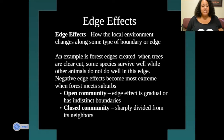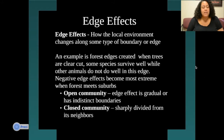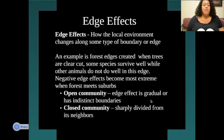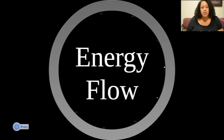The edge effect is how the local environment changes along some type of boundary or edge. A great example is when a clear-cut of trees occurs — like in suburbs where all of a sudden it's forest, then it's houses — and it can have a negative effect on animals like deer. Open communities have a gradual or indistinct edge effect, slowly changing from forest to grassland. Closed communities are sharply divided from their surroundings, like a suburb on one end and a forest on the other, with just a sharp tree line connecting the two.